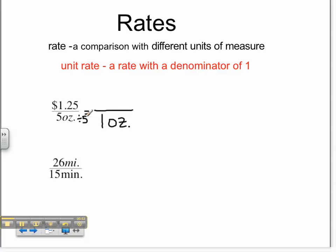How do I convert my cost into an equivalent unit rate? You divide $1.25 by 5. Thanks. And what's $1.25 divided by 5, Paul? 40 cents. 40 cents. So we know that our unit rate is 40 cents per ounce.